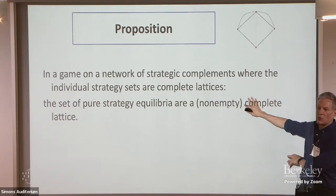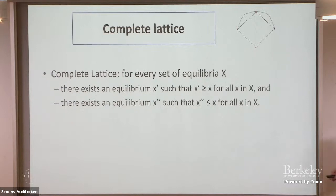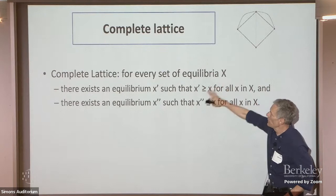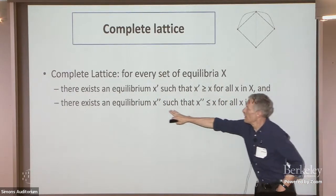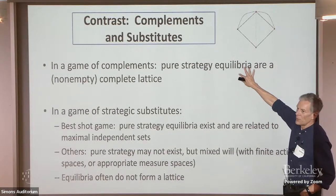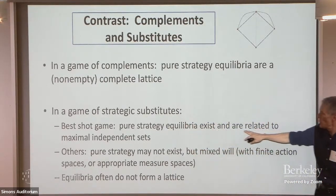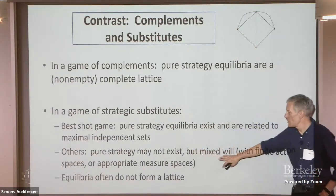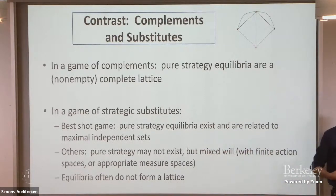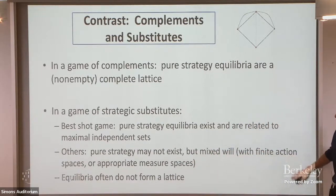Complements have really nice structures — write down whatever utility function you want, and you get a nice structure of equilibria. Contrasting games of substitutes: with the best shot public goods game (a special case), pure strategy equilibria exist and are related to maximal independent sets, but more generally they might not exist. When one person wants to take it, the other doesn't — you can get cycle dynamics. Pure strategy equilibria may not exist; mixed strategy equilibria will with finite action spaces, but generally equilibria won't form a lattice.